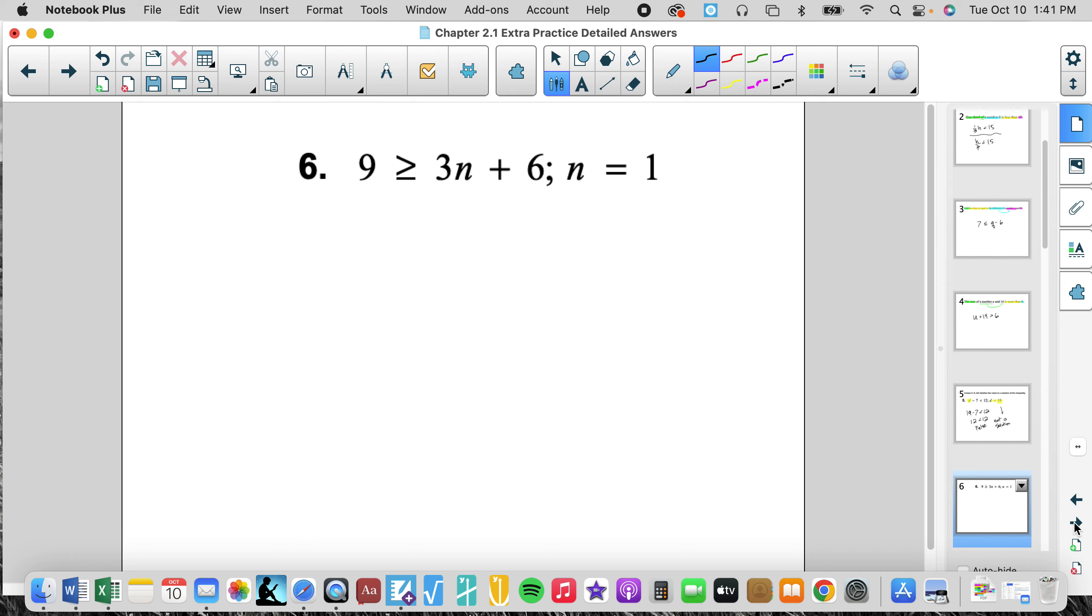We have our next inequality. We have 9 is greater than or equal to 3 plus 6n. We're going to plug in 1 for n. Orders of operation tells me to multiply first before adding. 3 times 1 is 3, and then 3 plus 6 is 9. We're always going to simplify the left side completely and simplify the right side completely. Is 9 greater than or equal to 9? Yes that's true. So since it's true, that means 1 is a solution to this inequality.